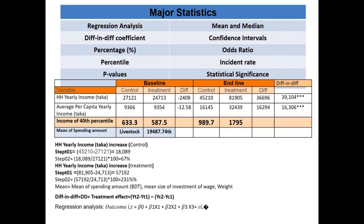Key findings show that 67 percent of the control group's beneficiary incomes increased, while 231 percent of the treatment group's beneficiary incomes increased. The difference-in-differences coefficient shows approximately 40,000 taka contribution attributable to the SHOPNO project. For average per capita yearly income, the SHOPNO project contributed around 17,000 taka. Regression analysis was also used, detailed in the analysis section.